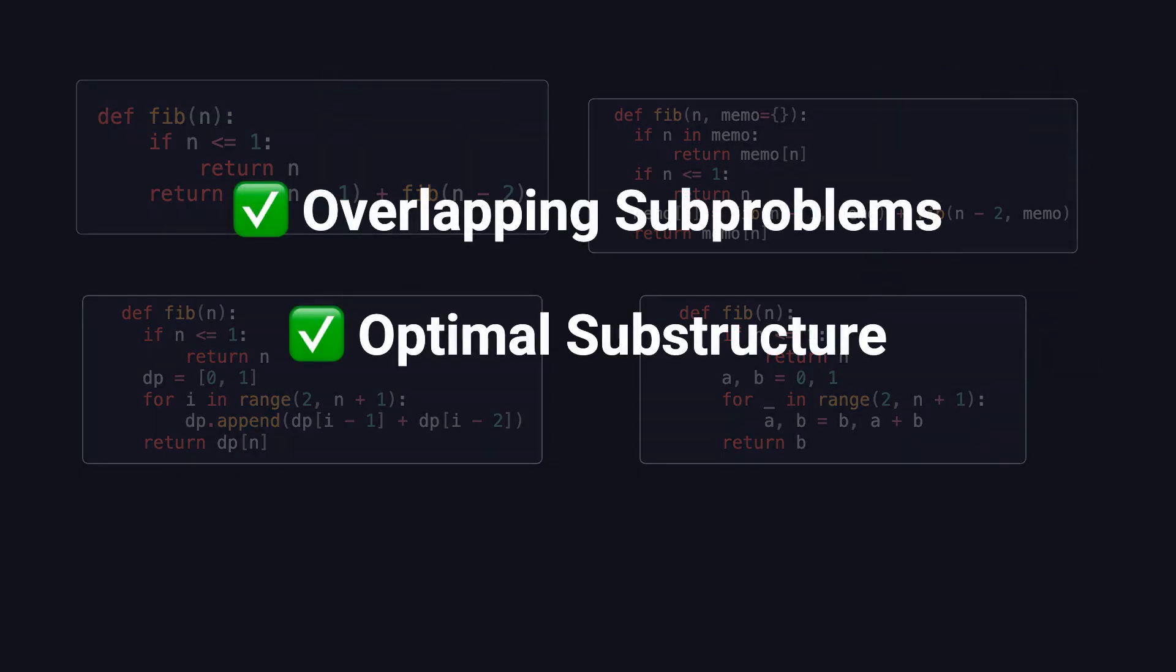Along the way, we also talked about the two core properties that define dynamic programming: overlapping subproblems and optimal substructure. A problem needs to have both of these in order for DP to be the right tool.